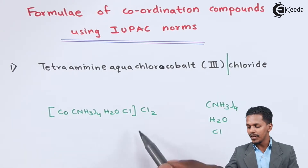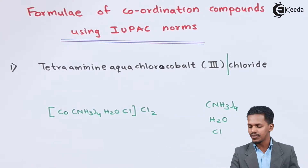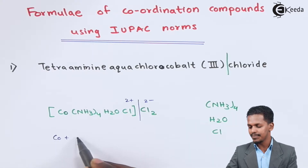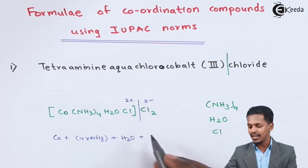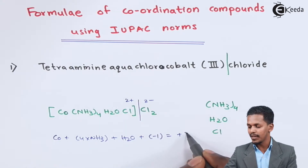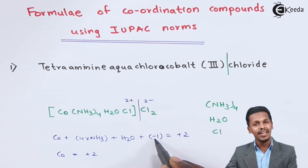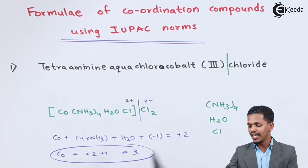We can cross-check: the 2 chlorine atoms in the primary entity give an overall charge of 2 minus, so the complex must be 2 plus. For cobalt: Co + 4NH₃ (neutral) + H₂O (neutral) + Cl (oxidation state minus 1) with overall complex charge plus 2 — this gives cobalt an oxidation state of plus 3, which confirms the IUPAC name.